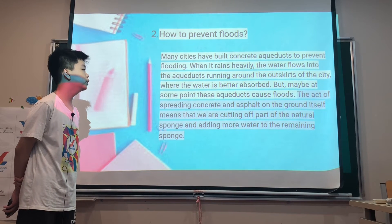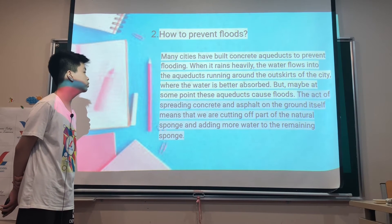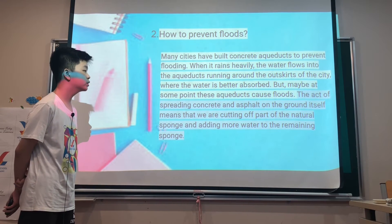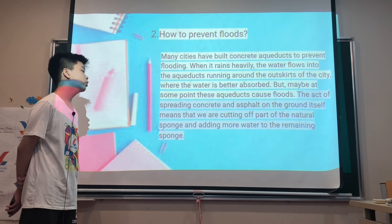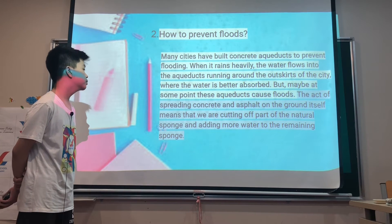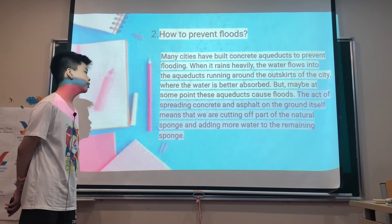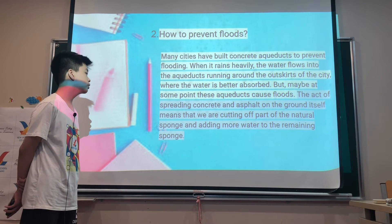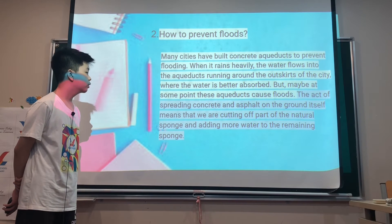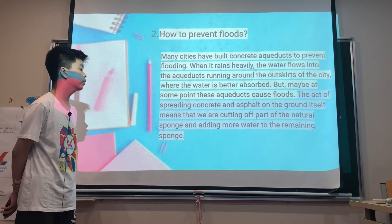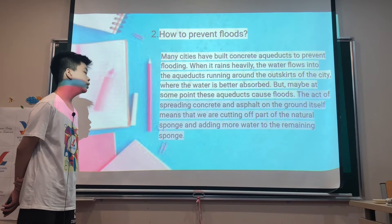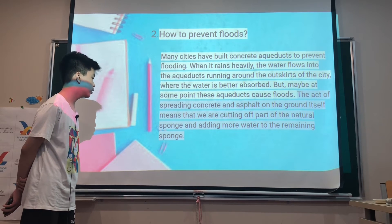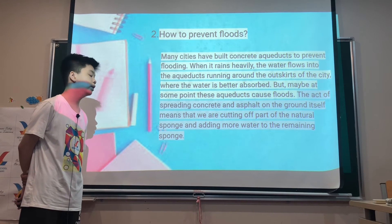Second, how to prevent floods. Many cities have built concrete aqueducts to prevent flooding. When it rains heavily, the water flows into the aqueducts running around the outskirts of the city where the water is better absorbed. However, at some point these aqueducts can cause floods. The act of spreading concrete and asphalt on the ground means that we are cutting off parts of the natural ground absorption and adding more water runoff.